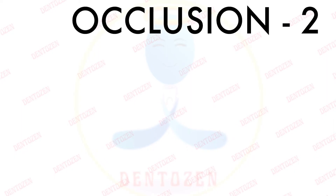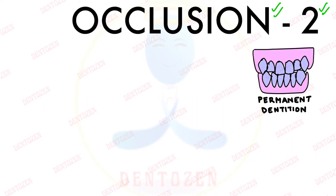Hi everyone, welcome to Tenters and we are continuing with our lectures on occlusion. Today is part 2. In the first part, we discussed what is occlusion — it is the contact relationship of the teeth which develops through various stages.